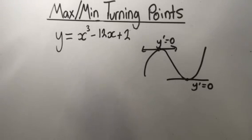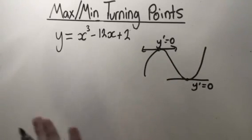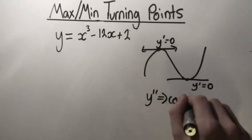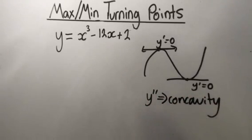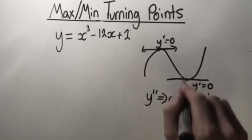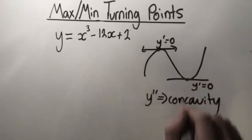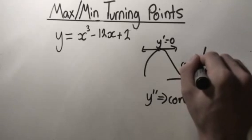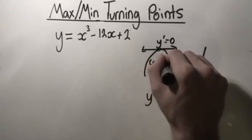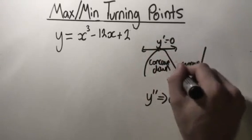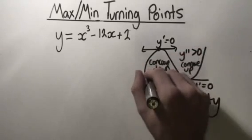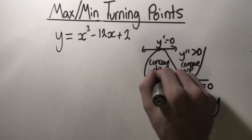We can also remember that we were able to find whether a turning point was a maximum or minimum — not just by looking at a graph, but if we don't have a graph, by looking at the second derivative. The second derivative tells us the concavity of a point. If we put that x value into the second derivative and it comes up as positive, the concavity is up — it's concave up. If it bends down, the second derivative will be less than zero.